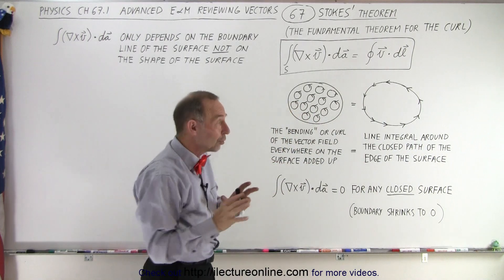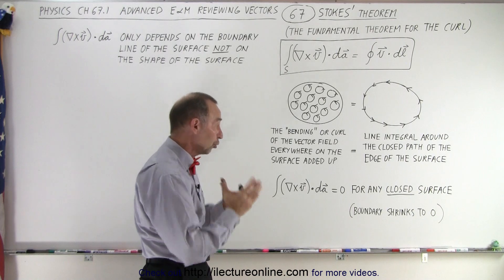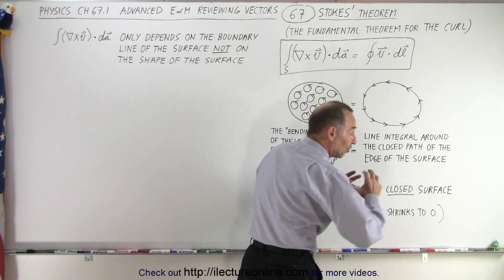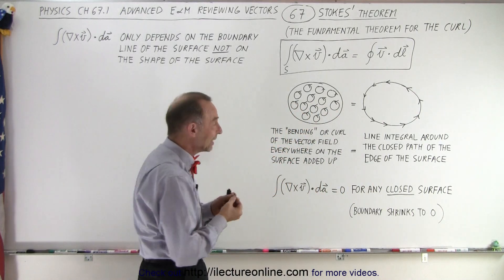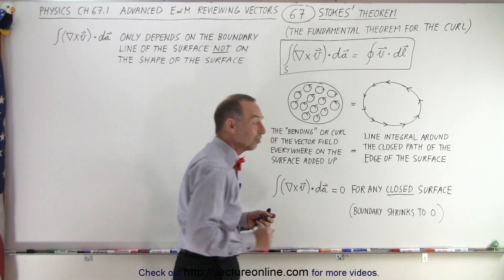Now, notice that if there is no edge to the surface, when will that happen? Well, when there's a closed surface. For any closed surface, the boundary shrinks to zero. There is no edge along which we can then integrate, and therefore, we can see that the left side will become equal to zero.